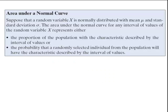Area under a normal curve: suppose that a random variable x is normally distributed with mean mu and standard deviation sigma. The area under the curve for any interval of values represents either the proportion of the population with the characteristic described by that interval, or the probability that a randomly selected individual from the population will have the characteristic described by that interval.